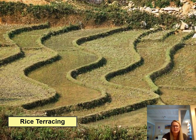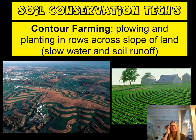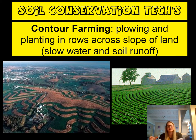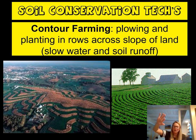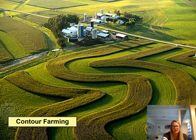Rice terraces look different in different places of the world, but the idea is the same. Contour farming is another soil conservation technique where you plow or plant with the contours of the land. If you've ever been in a plane and noticed a farm shaped like a U, that farm was utilizing the slope of the land. You water from the top, and water slowly moves down through the crops, keeping soil in place.